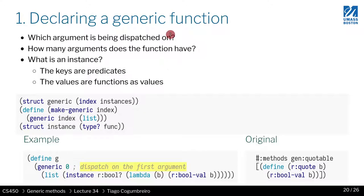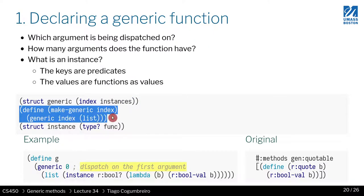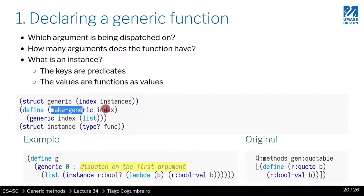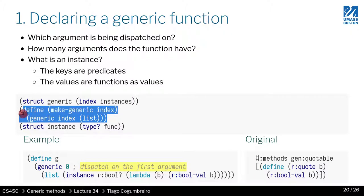So we can implement this very easily. We define a struct for generic, and we say, what is the index, and what are the instances? So things that have been implemented. We can create our factory to just say, my generic, and I give the index. And currently, the list of functions being registered is initialized with empty.